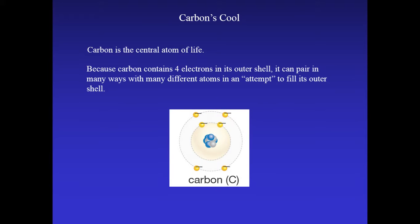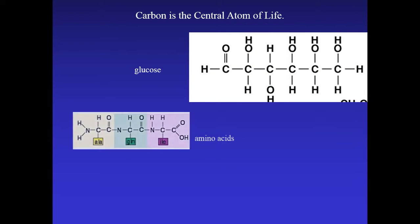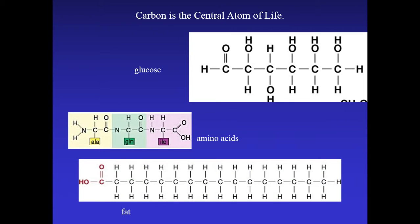Carbon is the central atom of all biochemicals. From the atomic model of carbon, we know it has four electrons in its outermost shell. This is very unique and it allows carbon to pair with many different atoms as it attempts to fill its outermost shell. Notice that the backbone of all biochemical structures is carbon, with many different atoms attached to it.